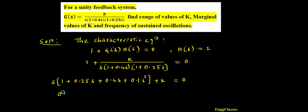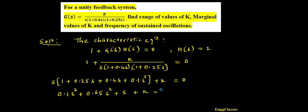Rearranging in descending powers of s, I get: 0.1s³ + 0.65s² + s + k = 0. Now I need to construct the Routh array for this characteristic polynomial.